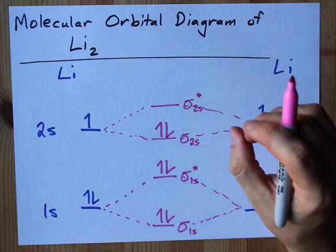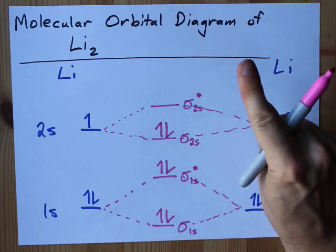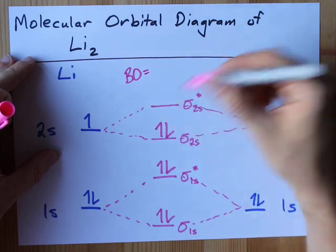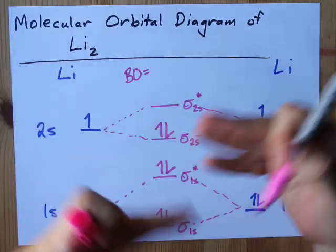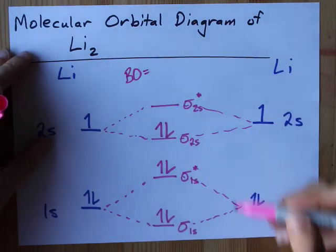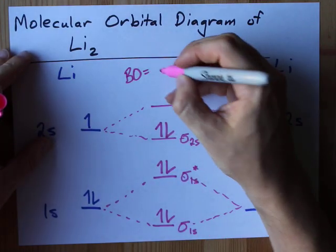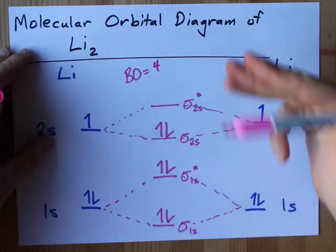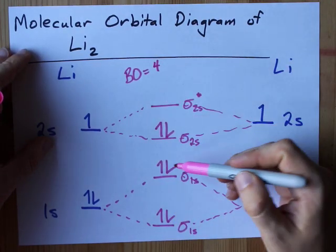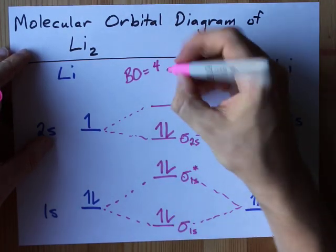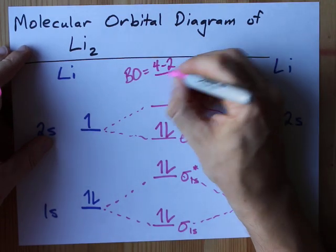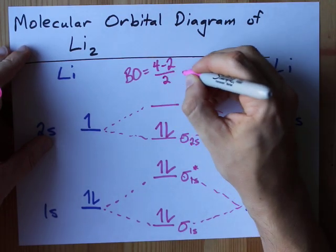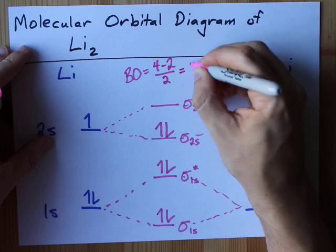That's going to give us a bond order of 1. The bond order is the number of electrons in bonding orbitals minus the number of electrons in anti-bonding orbitals — that's 4 and 2 — which gives us 4 minus 2 equals 2, divided by 2, equals 1.